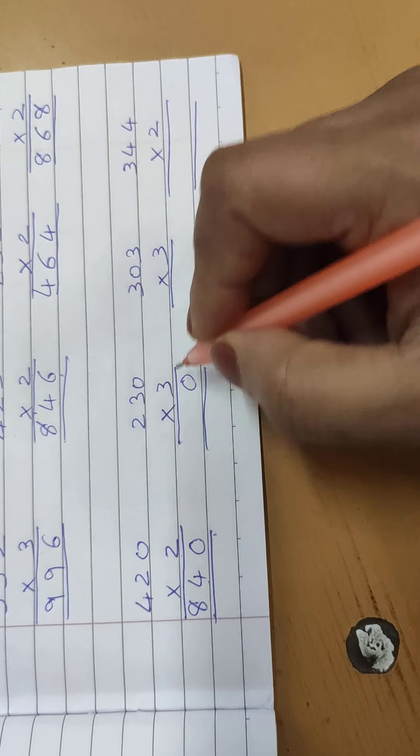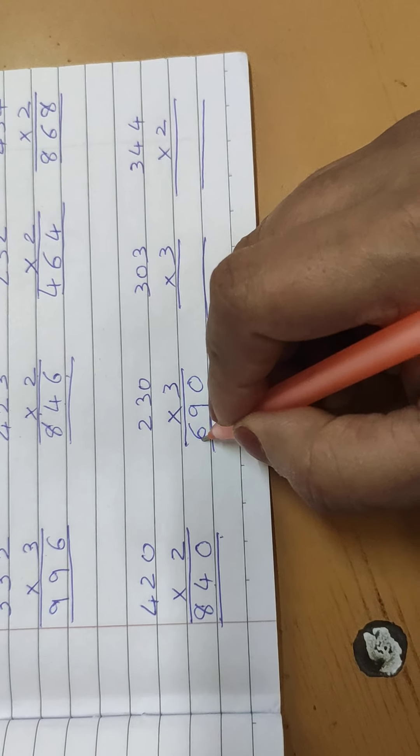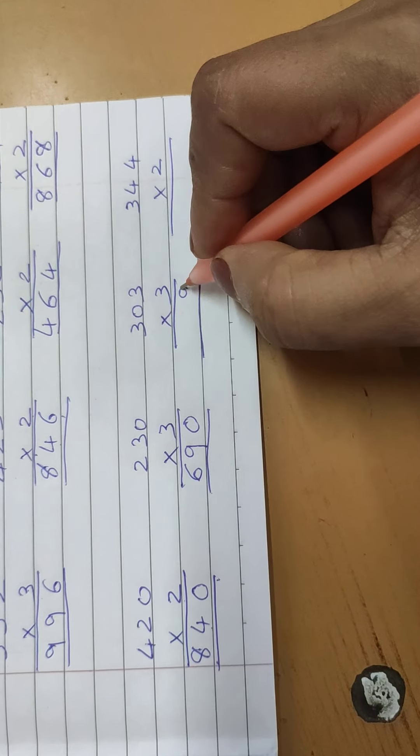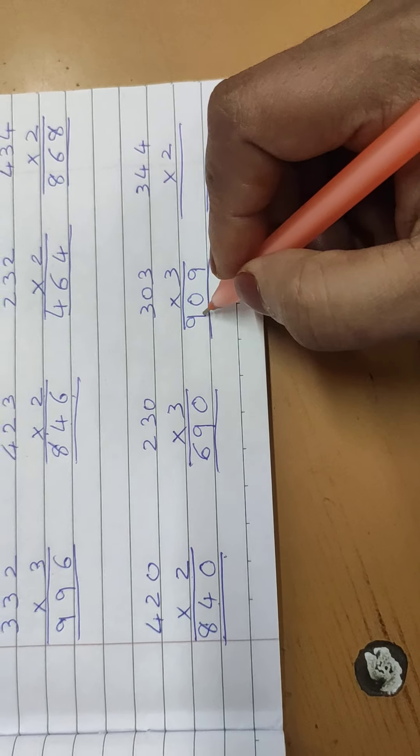230. 3 zeros are 0, 3 threes are 9, 3 twos are 6. 690. 303. 3 threes are 9, 3 zeros are 0, 3 threes are 9. 999.